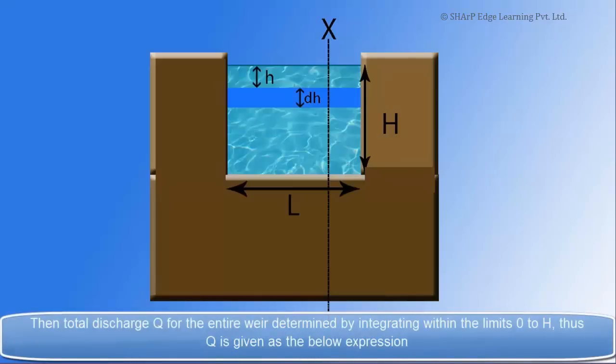Then, total discharge Q for the entire weir determined by integrating within the limits 0 to H. Thus, Q is given as the below expression.